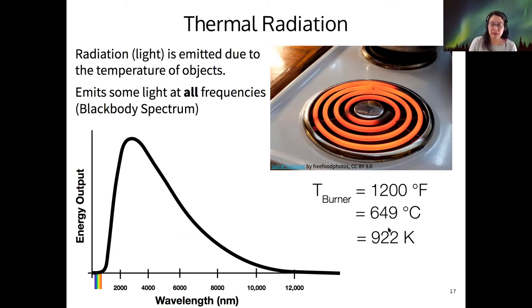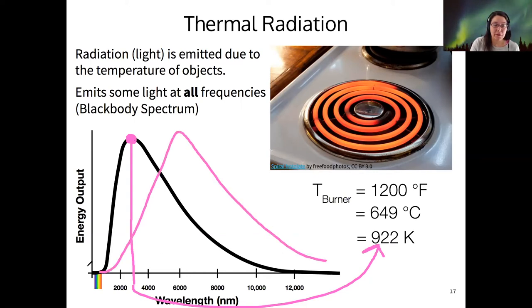So at 922 Kelvin, it turns out that the largest amount of energy output, or what we would call the peak of this graph, let me draw on, this is what I mean when I say the peak of the graph, the tallest point, the peak of that graph at 922 Kelvin happens at a wavelength around 3000 nanometers. So that's an important point that 3000 nanometers is determined uniquely by this temperature in Kelvin. So that peak would happen at a different location, it could happen at longer wavelengths, it could happen at shorter wavelengths, if you had a hotter or colder object.